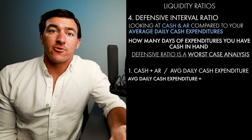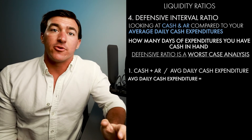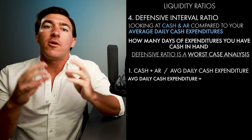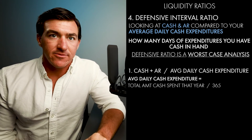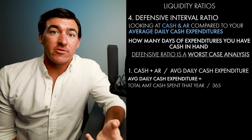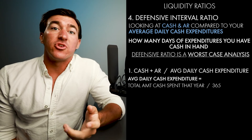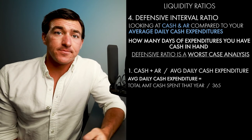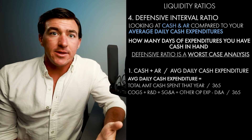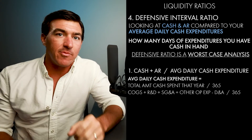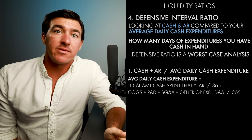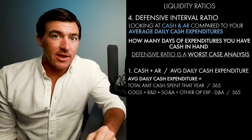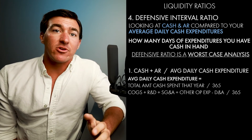Most analysts, especially outside investors and consultants, don't have that detailed information about their clients or portfolios. So they look at the entire year and back into it: what's the total amount spent in cash that year, divided by 365. The easiest approach is looking at all operating expenses and removing depreciation and amortization, since those are non-cash expenses. That would be cost of goods sold, plus R&D, plus SG&A, plus other operating expenses, minus depreciation and amortization — giving you total cash expenditures for the year, divided by 365.